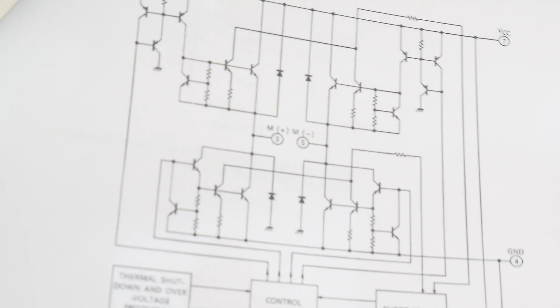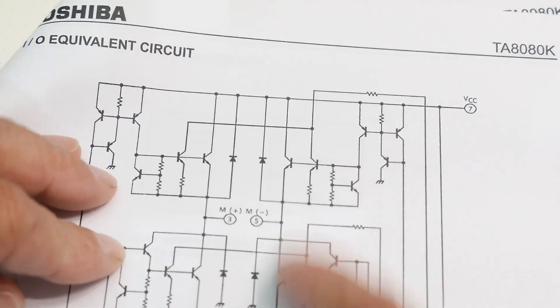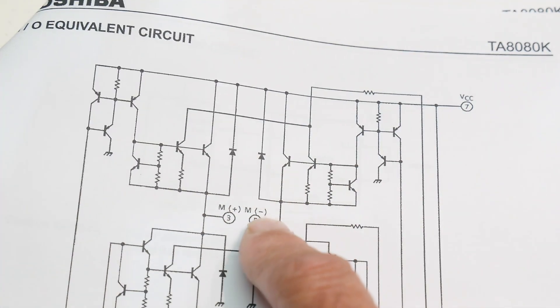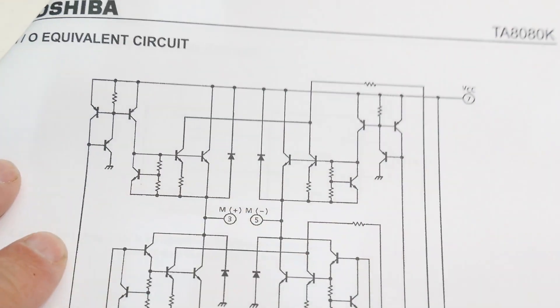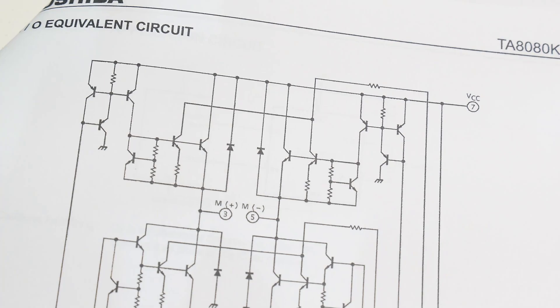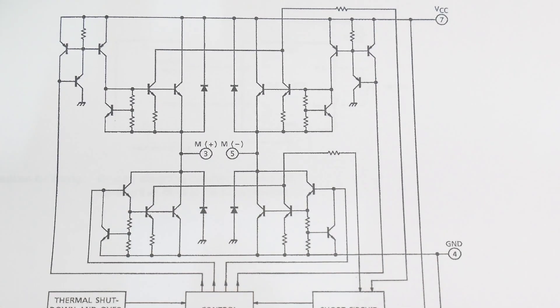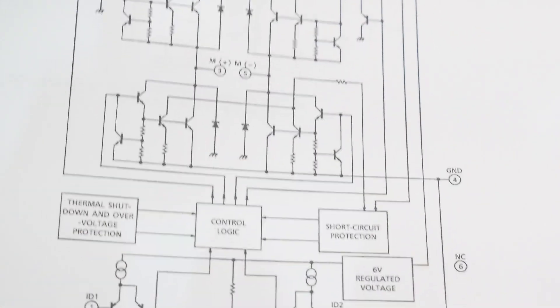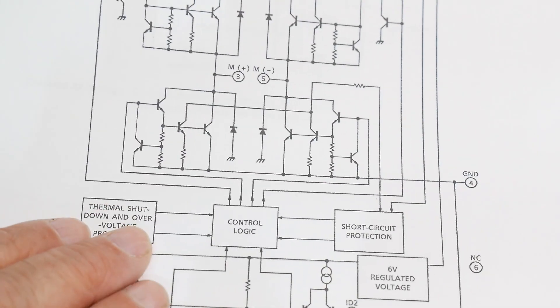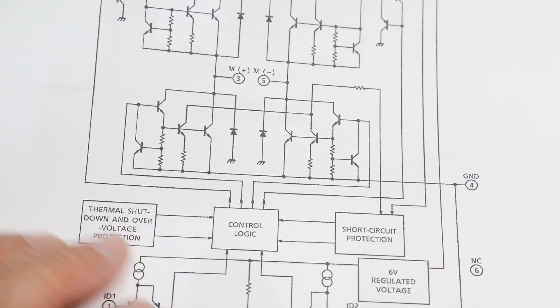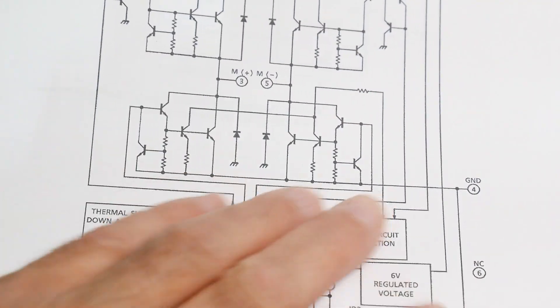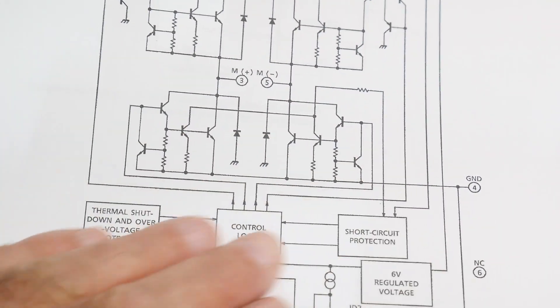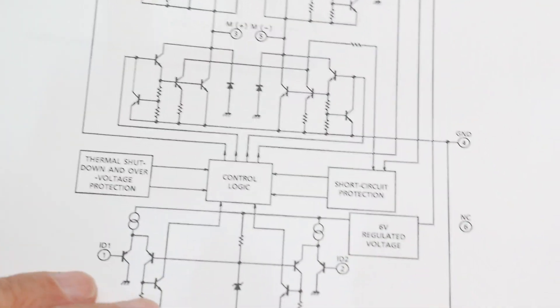So here is the schematic. The H bridge is a little fancier than just the way I drew it, so it has short circuit protection and a bunch of other things in there, so it's more clever than just the way I drew it. It has some thermal shutdown, so if it gets too hot, if it's over voltage it will shut down, if it's short circuited it will shut down. So it's got all this cool protection in it.